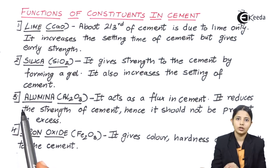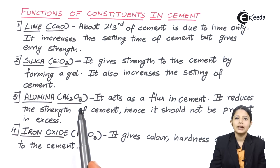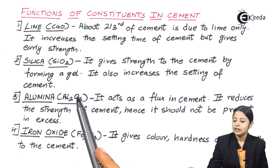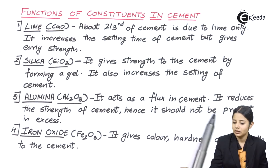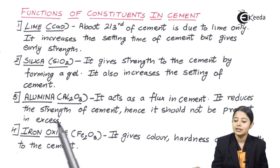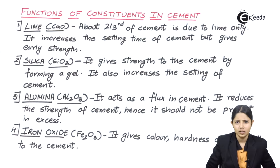The third most important component of cement is alumina Al2O3. Al2O3 is also again one of the most important components of cement. It acts as a flux in cement. It reduces the strength of the cement and hence it should not be present in excess. Now what exactly alumina is? It acts as a flux. Now what exactly a flux is?